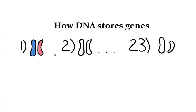For each one of these pairs of chromosomes, one came from dad while the other came from mom. One half of this pair came from the sperm of the father, while the other half came from the egg of the mother. The same is true for all 23 pairs. There's no particular order — it doesn't have to be dad first and mom second; it could be either way.